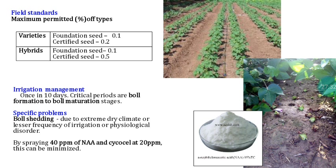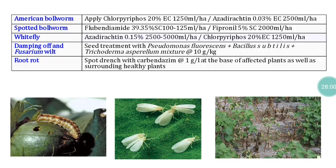Boll shedding has already been discussed as a specific problem. To overcome it, apply 40 ppm of NAA or Cycocel (another growth regulator). If Cycocel is used, the concentration is also 40 ppm. Cotton is a major host for numerous insects, creating serious threats.